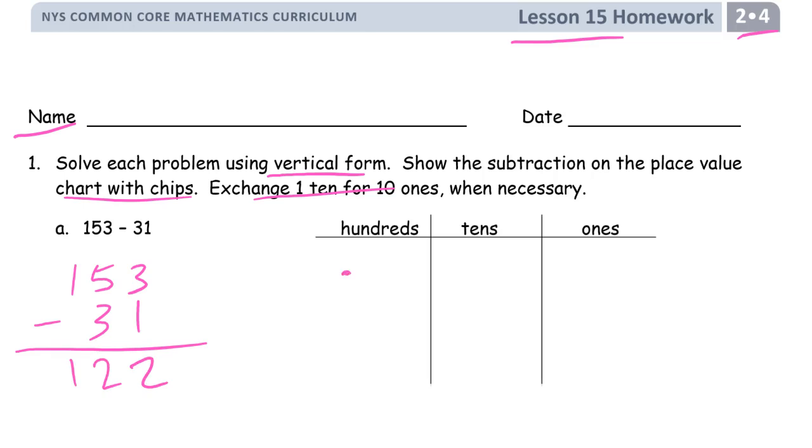We have 100, 5 tens (1, 2, 3, 4, 5), and 3 ones (1, 2, 3). And we can cross out 1 and we can cross out 3 tens. And we have 100 left, 2 tens left, and 2 ones.